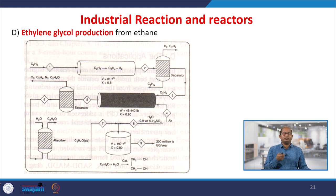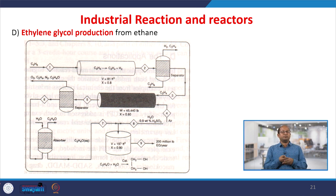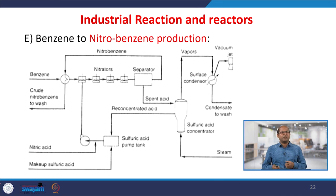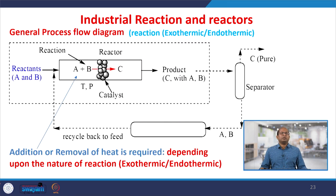Similarly, for ethane to ethylene glycol production: multiple reactors, multiple steps, and multiple processes are involved. Just to show industrially how the starting material ethane leads to ethylene glycol as the final product. Also, benzene to nitrobenzene production — the process flow diagram is shown but not discussed in detail here.